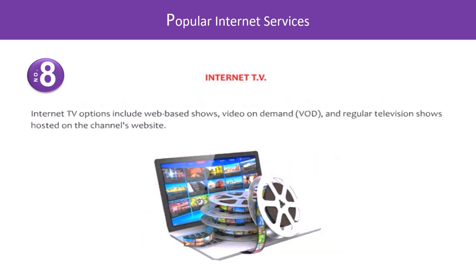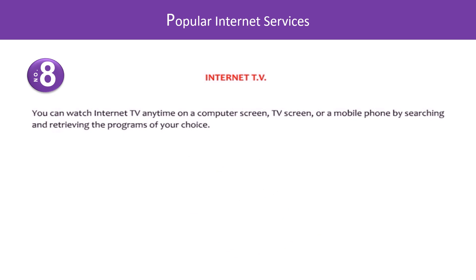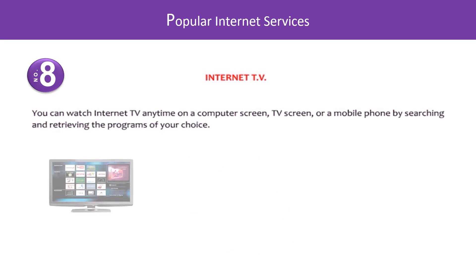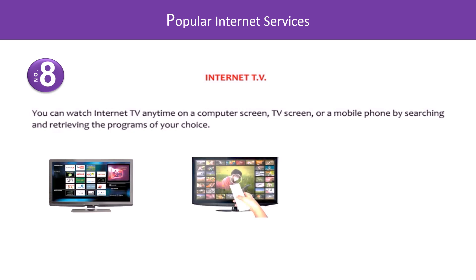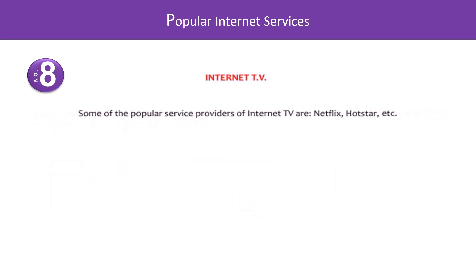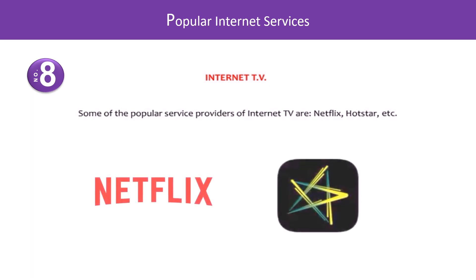Internet TV options include web-based shows, video on demand, and regular television shows hosted on a channel's website. You can watch internet TV anytime on a computer screen, television screen, or a mobile phone by searching and retrieving the programs of your choice. Some popular internet TV providers are Netflix, Hotstar, etc.